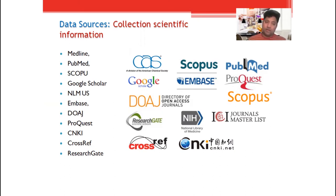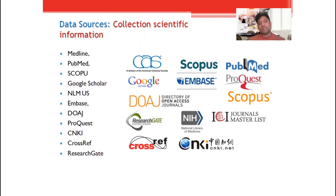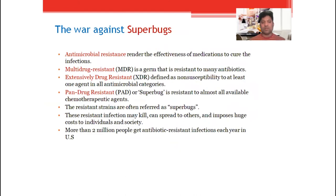then National Library of Medicine, U.S. MBS, Open Access Journal, Cureus, CNKI — that is a China-based database company standing for China National Knowledge Infrastructure — and some information collected from ResearchGate and Crossref.